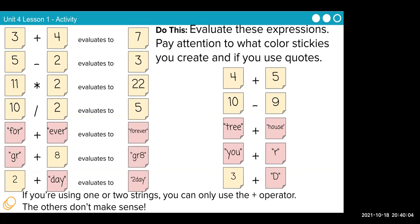Now, it gets a little trickier when we get to the strings. Four, in quotation marks, plus 'ever', evaluates to 'forever'. No space, no nothing. GR plus eight evaluates to a string, GR eight, 'great'. But it will be a string. You cannot turn it back into a number. Two plus 'day' becomes 'two day'. It is now a string. If you're doing one or two strings, you can only use the operator plus. The others don't make sense.